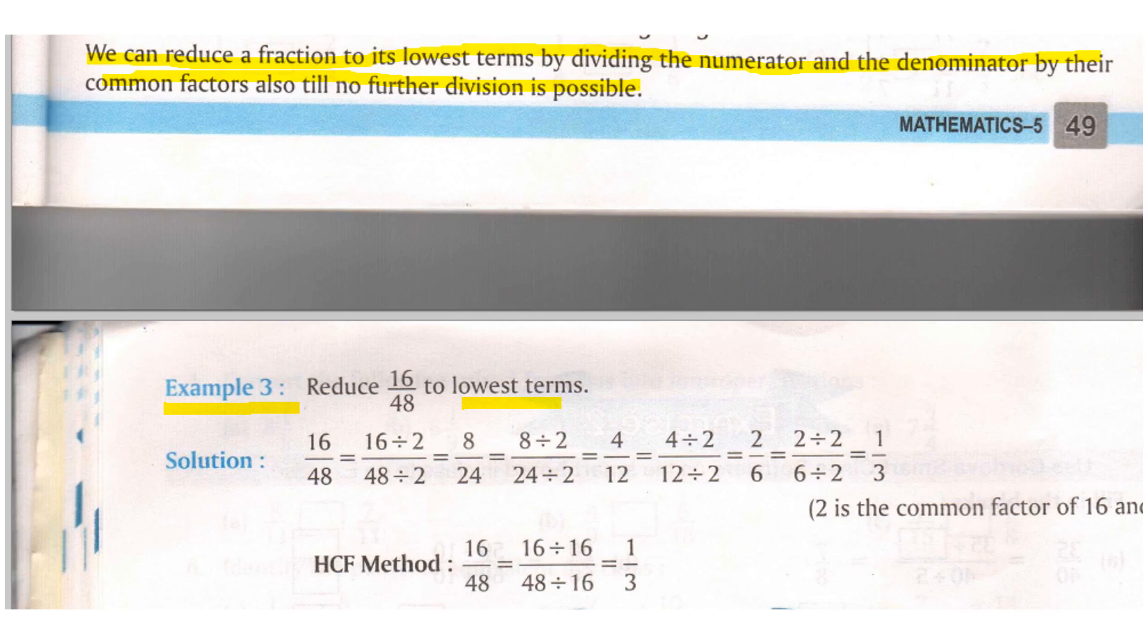So we will divide both the numbers by 16 divided by 2 and 48 divided by 2 will get 8 by 24. Still you can see they are divided by 2. Again we are dividing 8 divided by 2 will give a 4 and 24 divided by 2 will give a 12.